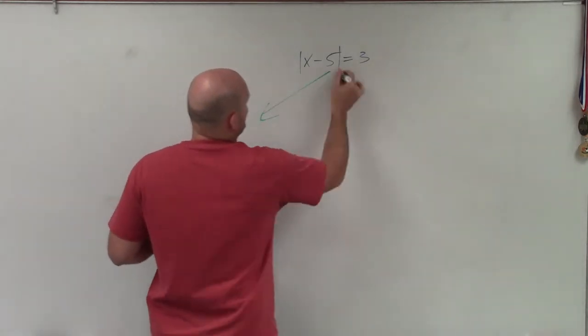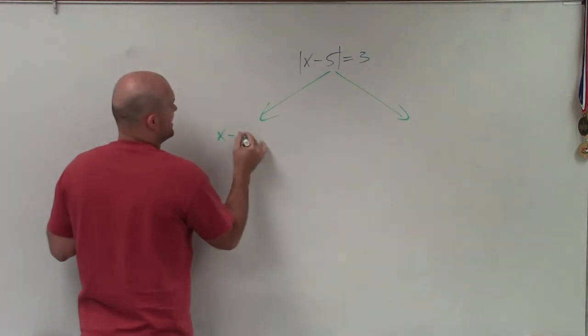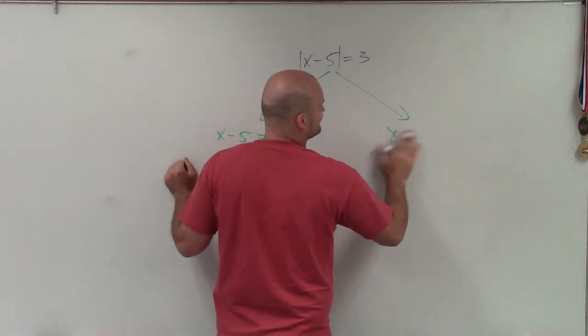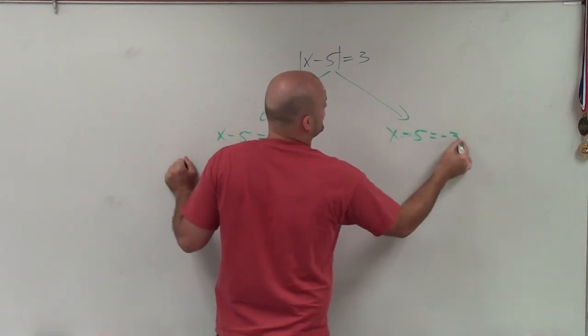So I simply just draw two cases. So I can say x minus 5 is equal to positive 3, or x minus 5 is equal to negative 3.